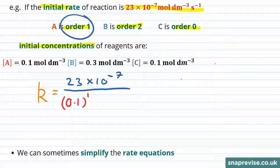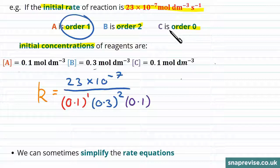For reagent B, its concentration is 0.3 moles per decimetre cubed and its order is 2, so we raise to the power of 2. And finally, for reagent C, we have a concentration of 0.1 moles per decimetre cubed again and its order is 0, so we raise to the power of 0.